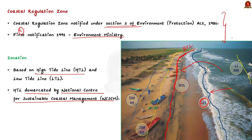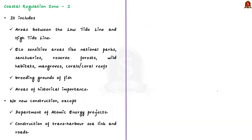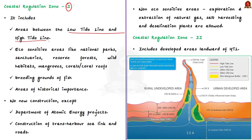With these basics, let us look at the different zonations in CRZ. CRZ 1 includes areas between the low tide line and the high tide line, and also includes areas that are ecologically sensitive and important such as national parks, marine parks, sanctuaries, reserve forests, wildlife habitats, mangroves, coral reefs, etc. It also includes areas closer to breeding and spawning grounds of fish, as well as areas of historical importance.